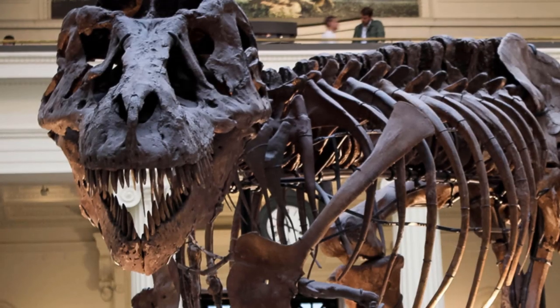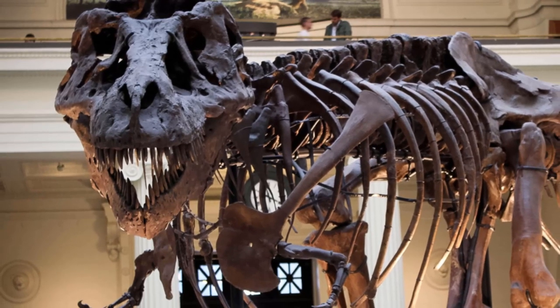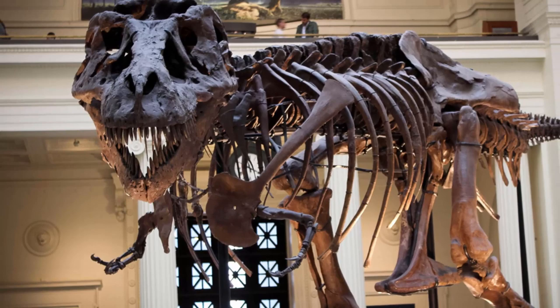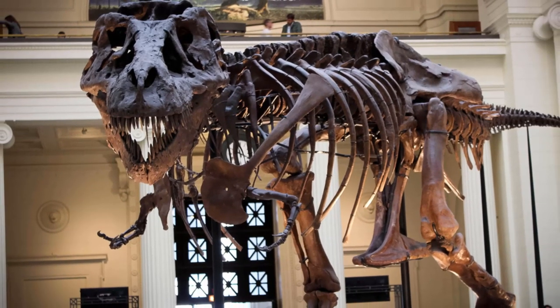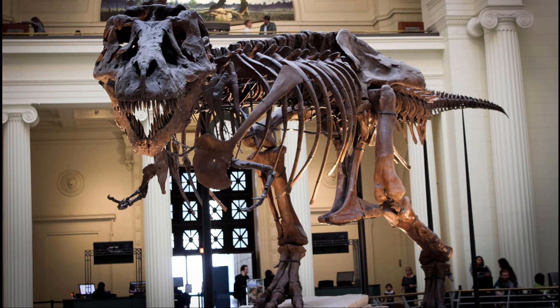If you go to a dinosaur museum, then you'll see guides telling you things like this dinosaur lived 50 million years ago, that one lived 70 million years ago. My question is, how do we know these things? Well, in this video, we'll look at some methods we use to date these fossils.